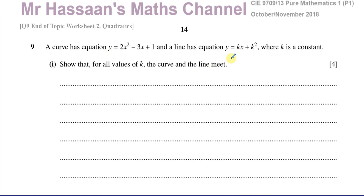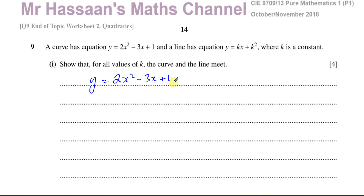So we have a quadratic and a linear. This is a linear because x is the variable and k is a constant — it's got something x plus some constant. So this is linear, this is quadratic. We've got to show that these will always meet. When we want to find out whether two graphs intersect or meet, we take the equations and solve them simultaneously. So we've got to solve y equals 2x squared minus 3x plus 1 and y equals kx plus k squared simultaneously.